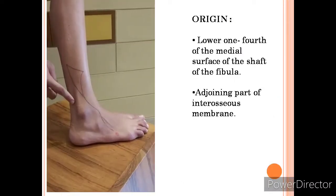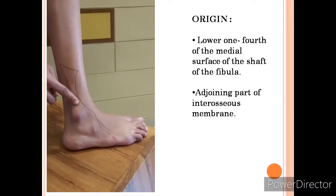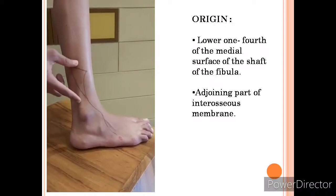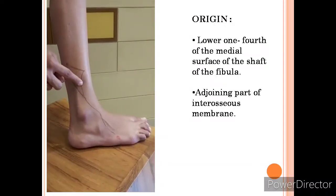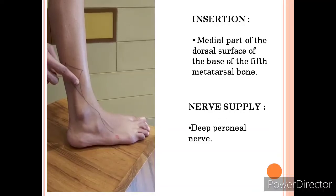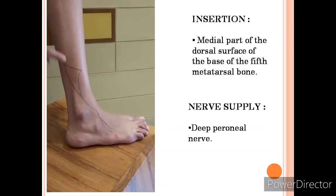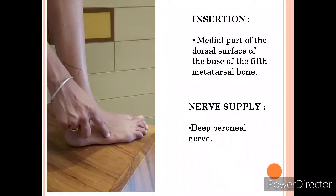Origin: Lower one-fourth part of the medial surface of the shaft of fibula, adjoining part of the interosseous membrane. Insertion: Medial part of the dorsal surface of the base of the fifth metatarsal bone.